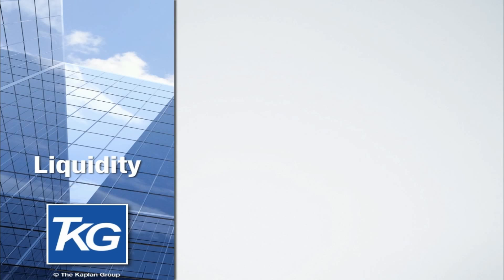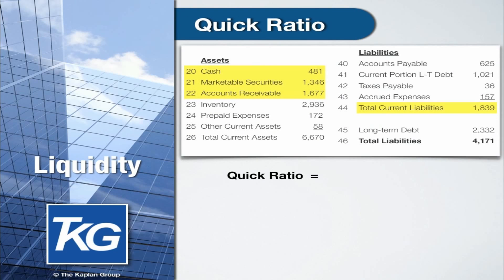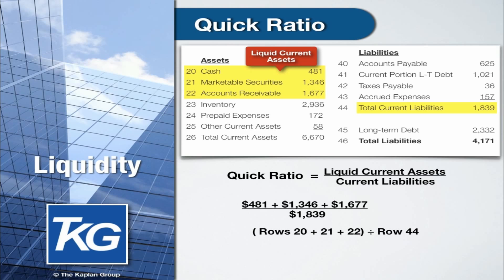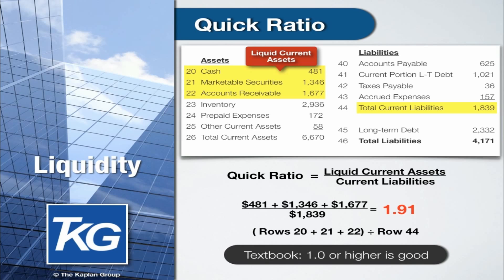The next ratio we are going to look at is the quick ratio. This excludes some of the current assets that cannot easily be turned into cash, such as inventory. So it is more like extremely liquid current assets, and then this amount is divided by current liabilities. In this example, the assets that would qualify as liquid current assets include cash, marketable securities, and accounts receivable. We divide that sum by the total of current liabilities, and we get a ratio of 1.91. The accounting textbooks say a ratio of 1.0 or higher shows adequate liquidity for most companies.